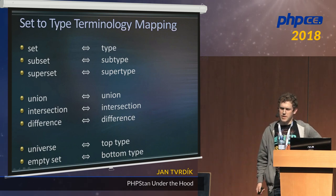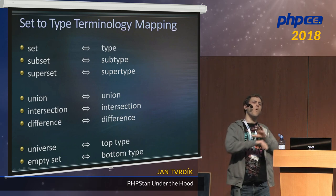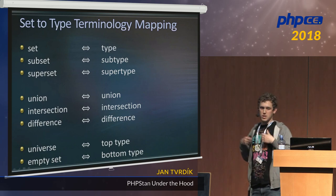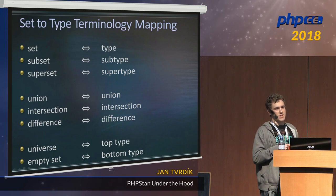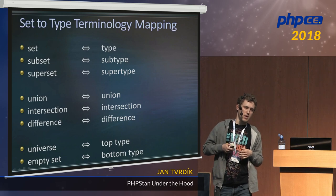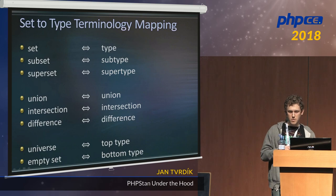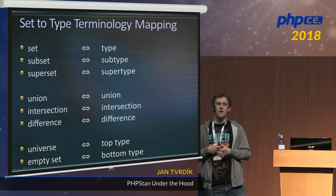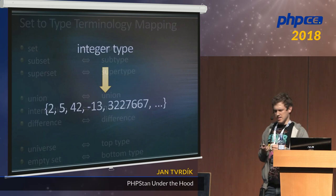Instead of 'universe set,' which represents all possible values that can exist, in type theory we call it the top type. The opposite is the empty set — a set containing no values — which in type theory is called the bottom type. The top type in PHP is commonly known as 'mixed.' The bottom type is less commonly known, but the term used by PHPStan — and also by TypeScript and Swift — is 'never.'